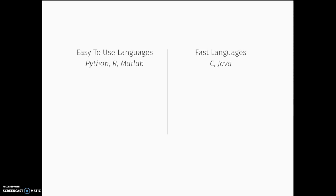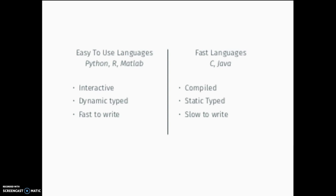Our world of languages these days tends to be divided into two categories: the easy, nice-to-use languages — Python, R, MATLAB — and the highly performant languages — the C family, Java, and similar. Beyond just running speed, the easy languages are interactive, dynamically typed, and fast to write. The downside is that they tend to be slow to run. If you write code purely in native Python, you'll really struggle with running time, particularly in larger machine learning or data applications.